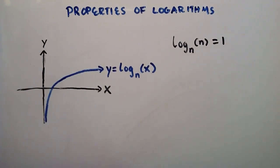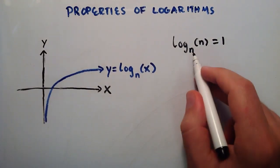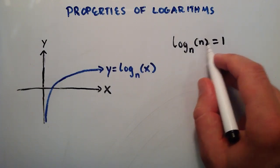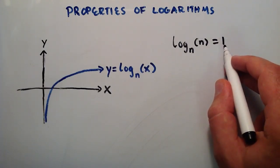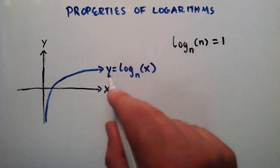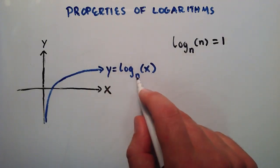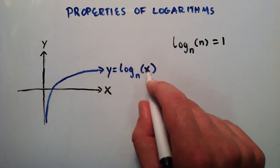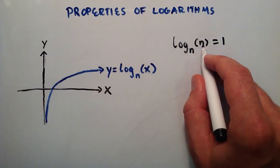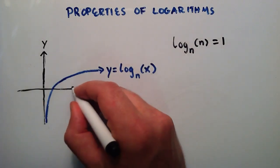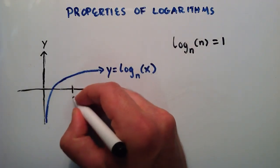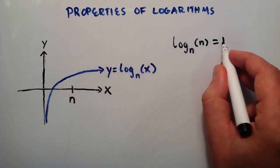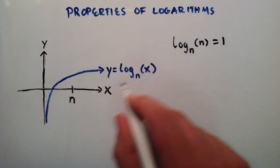So by saying that our base matches our argument, and it gives us a corresponding value of 1, that means that y equals log base n of x, this line right here, that means when we go over x units, in this case it's n for this property, so we're going over x, or n units in the x direction.